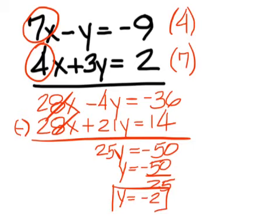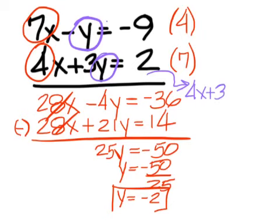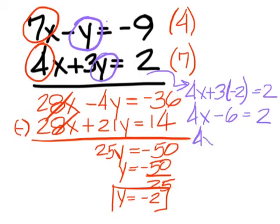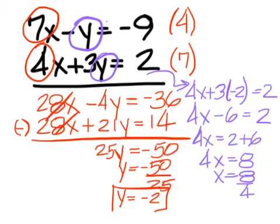Now, plug in that negative 2, either in the first y or the second one. I'm going to use the second one. 4x plus 3 times a negative 2 equals 2. That's a minus 6, which you move to the right. Make it plus 6. Turns into an 8. Divide. Answer is 2.